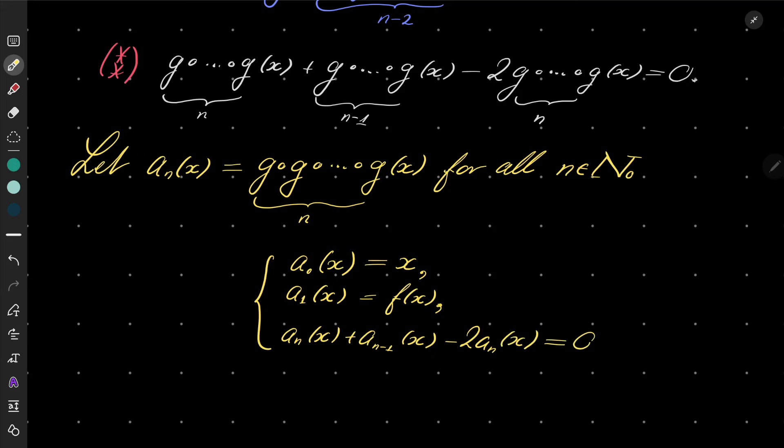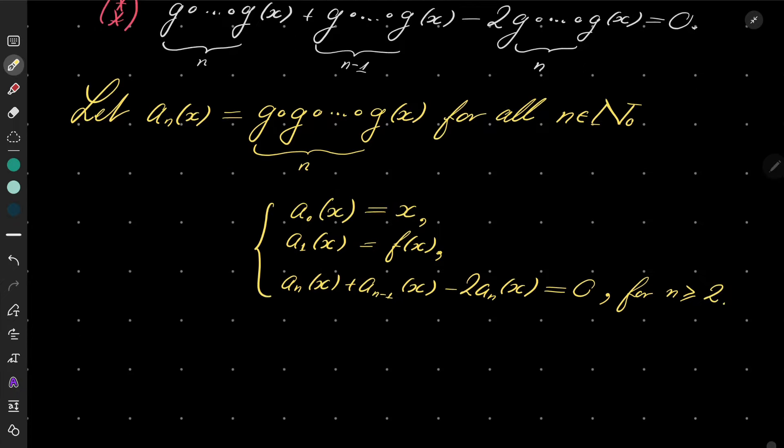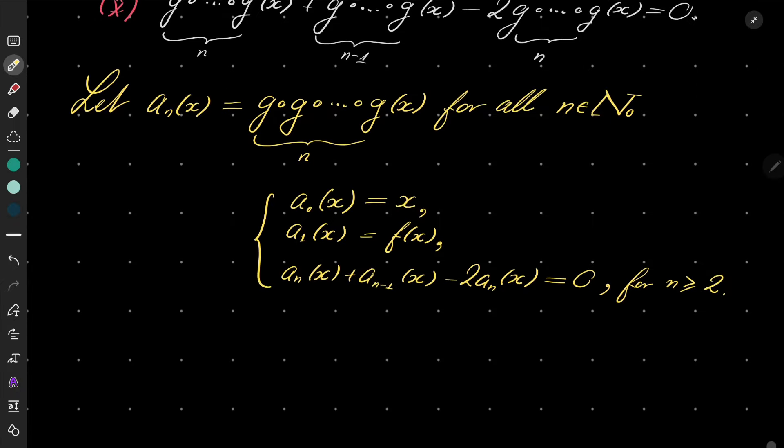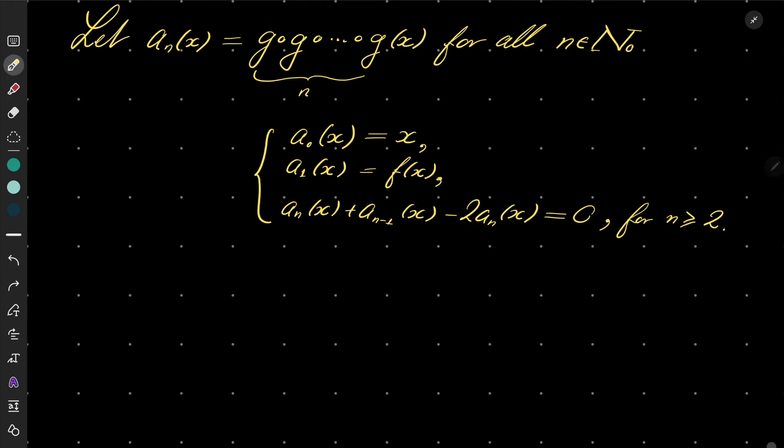For n greater than or equal to 2. Very well. Now this recursion is linear because here we have constant numbers 1, 1, and -2. These types of recursions can be very easily solved by characteristic polynomial.